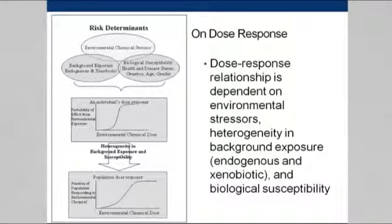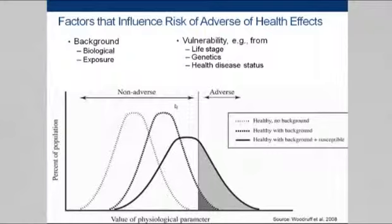In fact, this is what Ramya found in her research. This approach is also adapted from Tracy Woodruff's work that looked at the influence of other aspects on adverse effects. Analogous to Ramya's three lines, you see the percent of population and the normal bell curve of response from exposure. The dotted line represents the healthy with no background exposure. The middle distribution are the healthy with background exposures, and then the one with the greater area shaded under the adverse side are those folks with background exposure plus susceptibilities — vulnerability from genetics, life stage, health or disease status, or social factors.